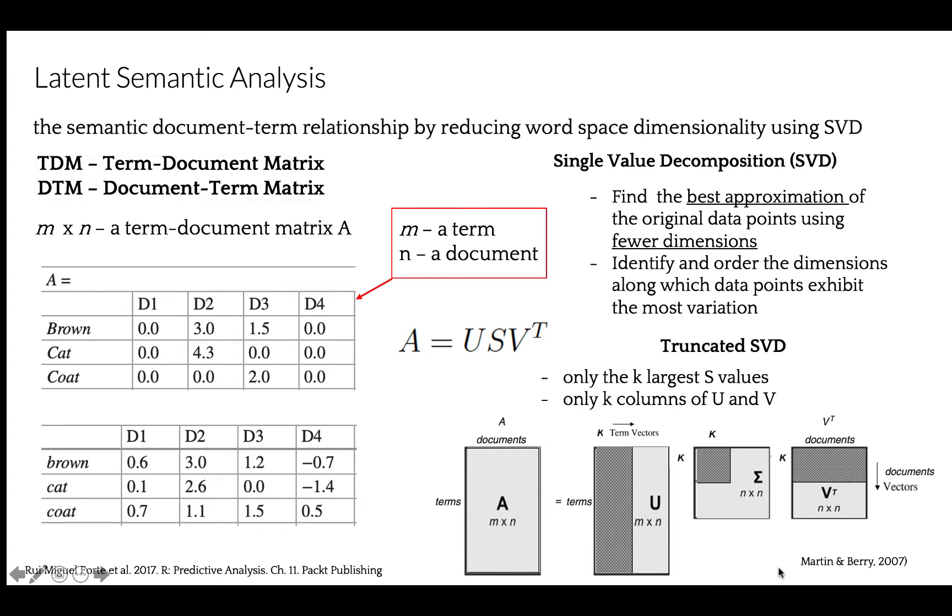Recall that we can represent collection of documents as DTM or TDM. Let's look at term-document matrix. Our rows are our terms, and the columns are documents. Of course, alternatively, we have rows as the documents and the columns as the terms. TDM decomposition is performed using single-value decomposition, SVD, which finds the best approximation of the original data points using fewer dimensions, and identifies in order dimensions along which data points exhibit most variation.